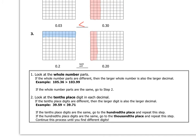There's an easier way to compare decimals than shading squares. To compare two decimals, always look at the whole number parts first. If they're different, just compare those — for example, 105.36 versus 103.99: since 105 is greater than 103, the first decimal is greater. But if the whole number parts are the same, move to the tenths place to see which digit is larger. If the tenths digits are the same, move to hundredths, then thousandths, and so on until you find two digits that differ.